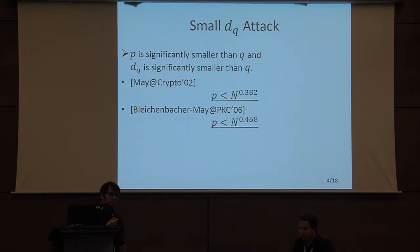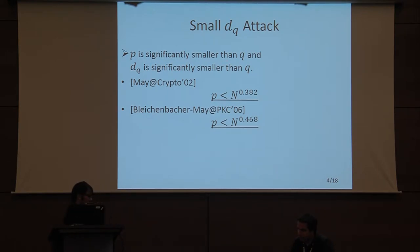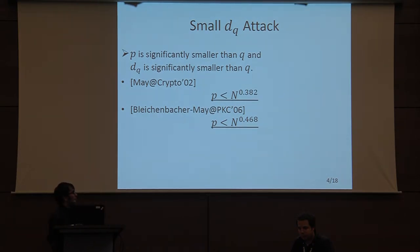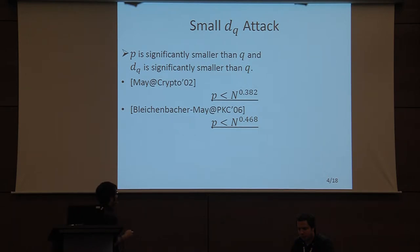For the attack, we introduce two attack scenarios. The first is the small dq attack. In this scenario, the prime factor P is significantly smaller than Q, and only dq is significantly small while dp is arbitrarily large. May proposed an attack working when P is smaller than N^0.382. After that, Bleichenbacher-May proposed an improved attack working when P is smaller than N^0.468. Although ten years have passed since their proposal, no improved attacks have been reported.